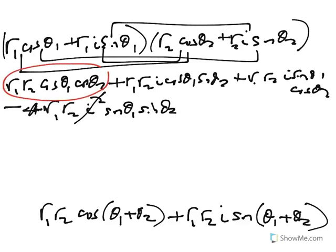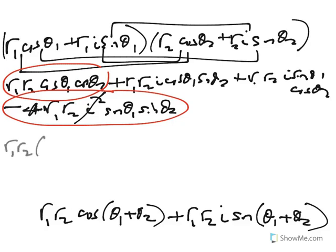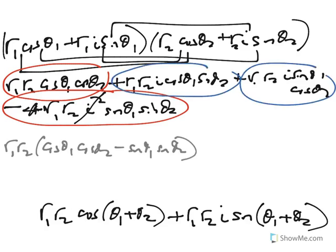Now, I'm going to take this term that has no i in it and this term that now has no i in it and group those together. I'm also going to factor out the R1 R2 and I get cosine theta 1 cosine theta 2 minus sine theta 1 sine theta 2. On the other hand, we've got these two guys, they have i in them so I'll factor out the R1 R2 and group those together and the i and I get cosine theta 1 sine theta 2 plus sine theta 1 cosine theta 2.